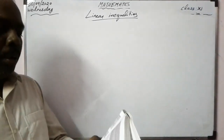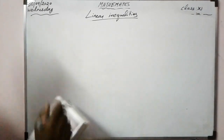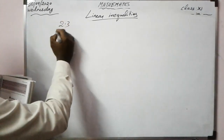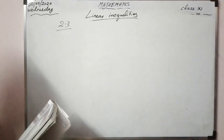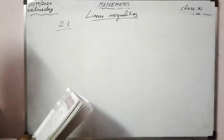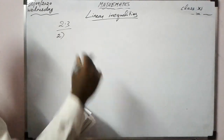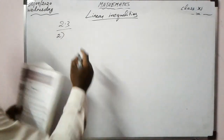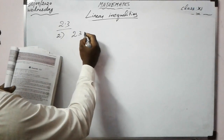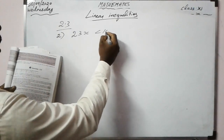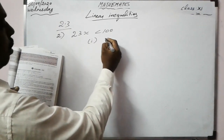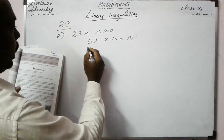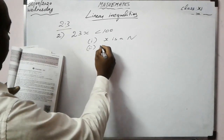Now some exercise problems. Exercise 2.3, second question: Solve 23x < 100. First part: x is a natural number. Second part: x is an integer.